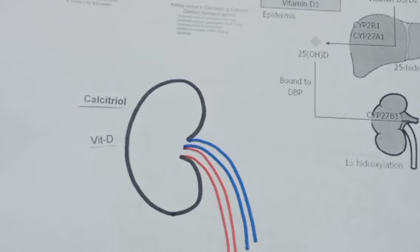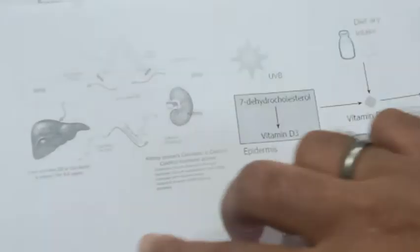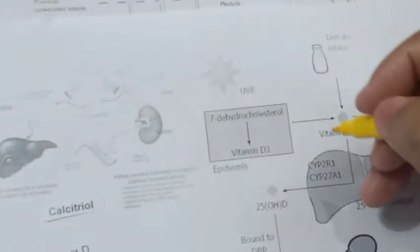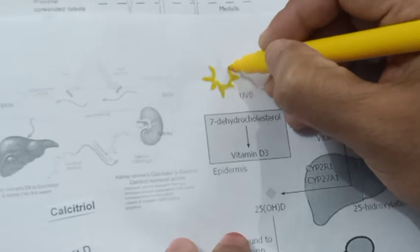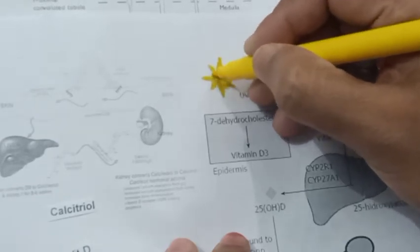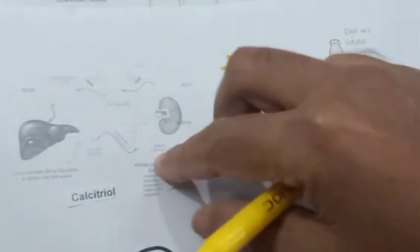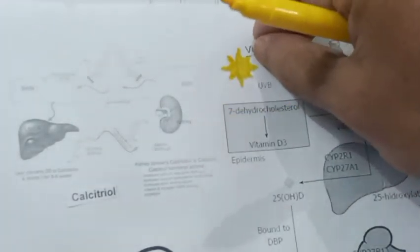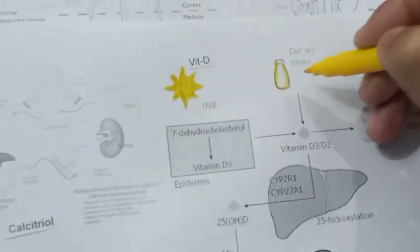Vitamin D, which we get from food and from fruits, as well as vitamin D which we get from sunlight via the skin — the Sun gives us sunlight. So vitamin D comes from sunlight and from dietary intake, such as milk.